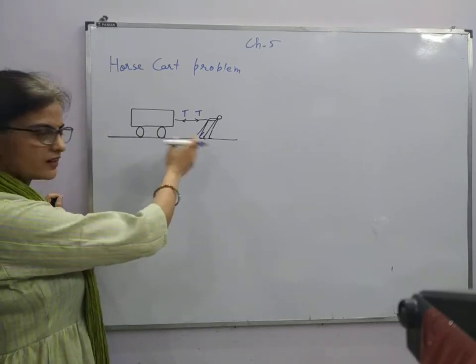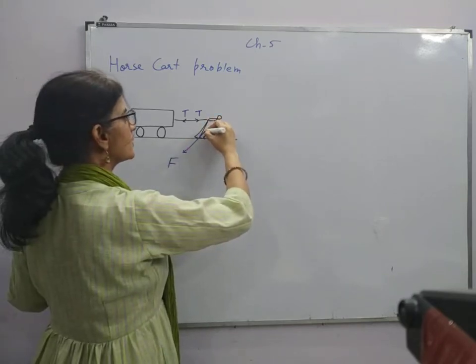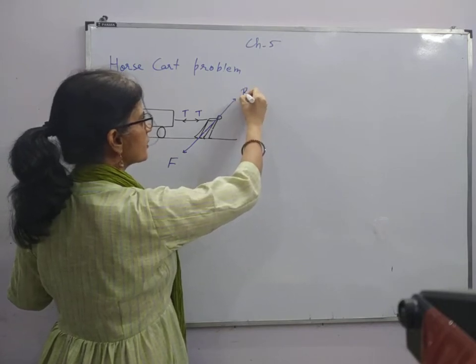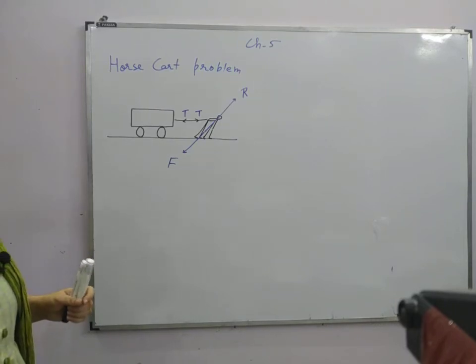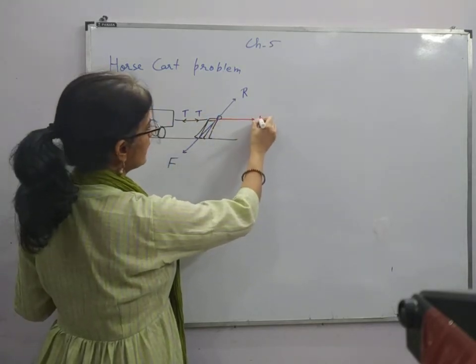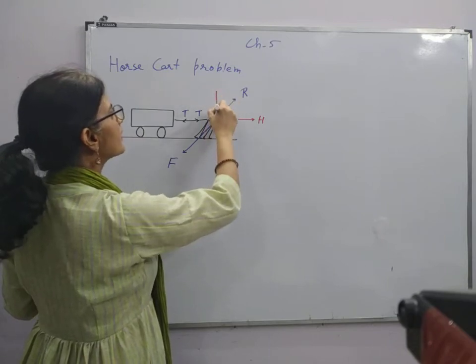That means he is pressing the ground and as a result he is experiencing the normal reaction of the ground on itself. Now this is an oblique force, it will have two components. One will be the horizontal component and the other will be the vertical component.